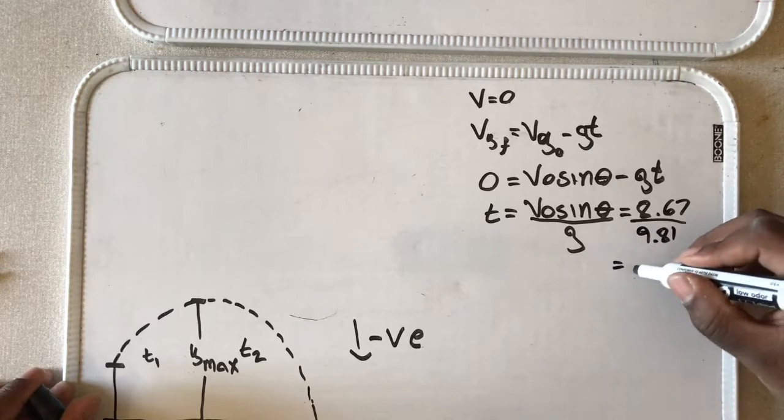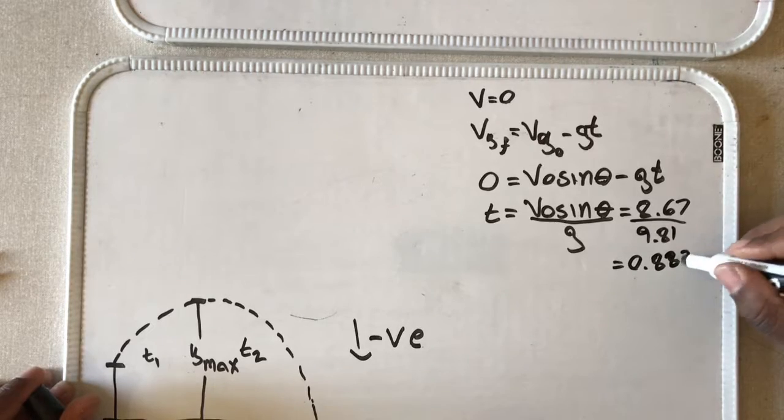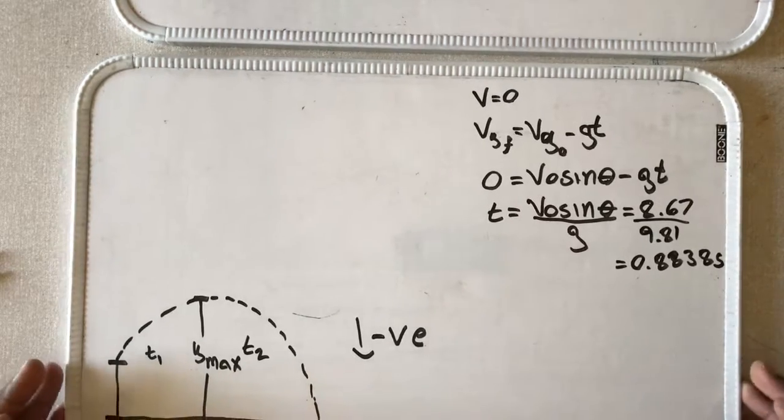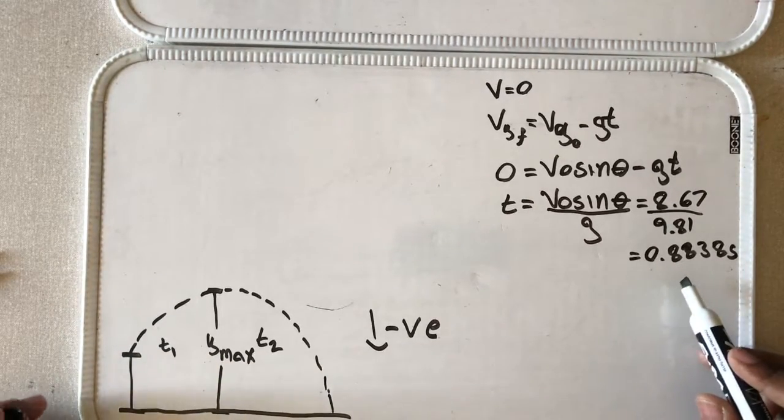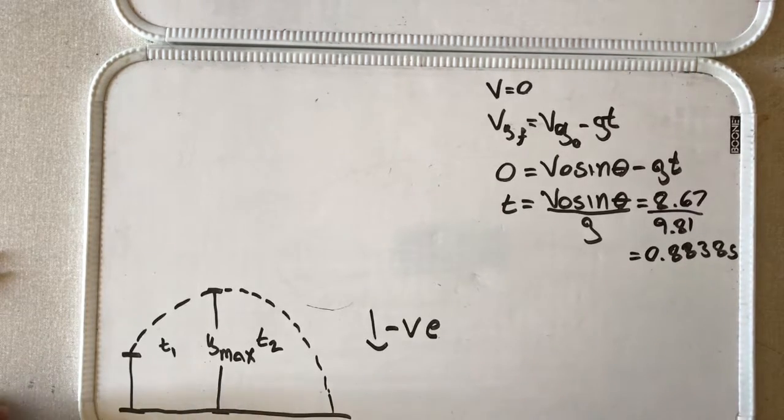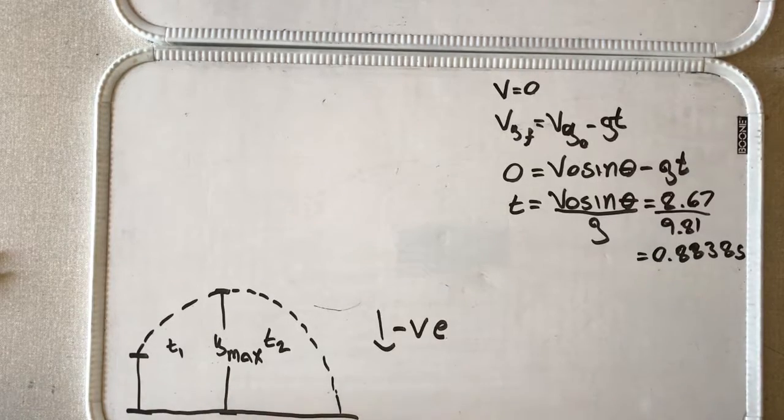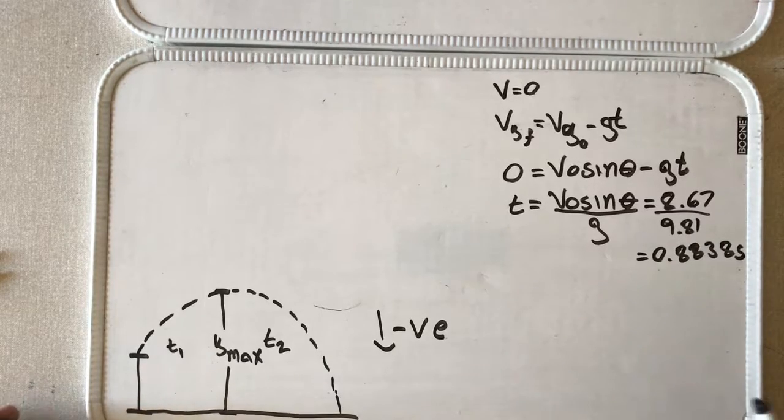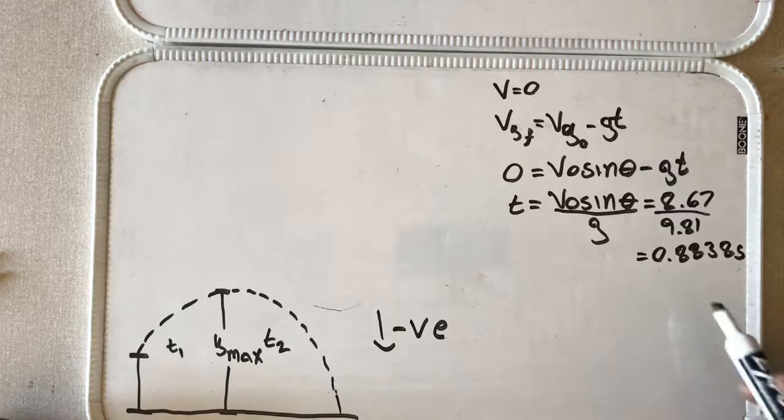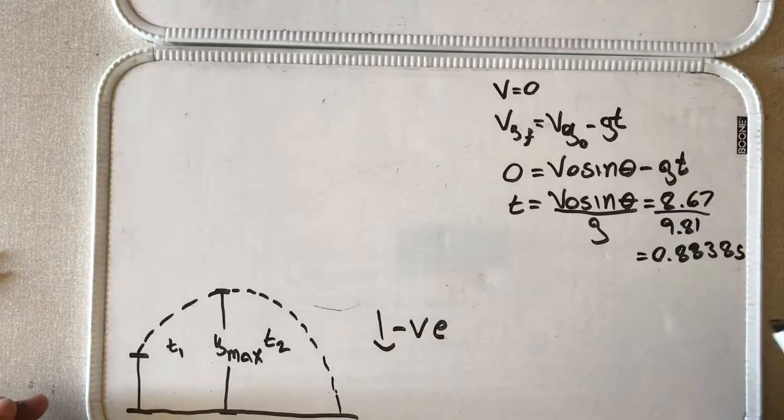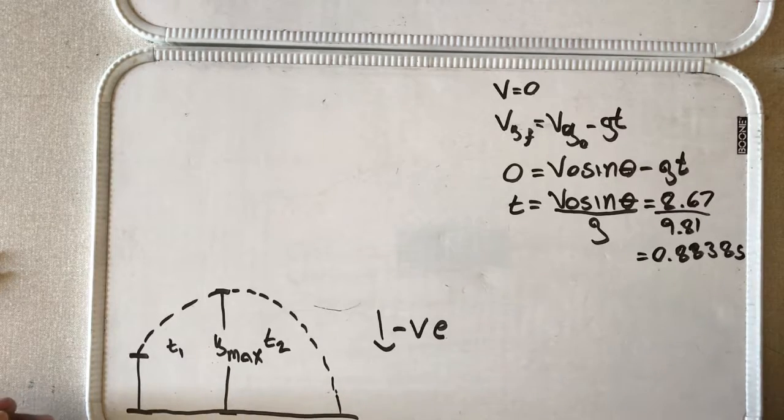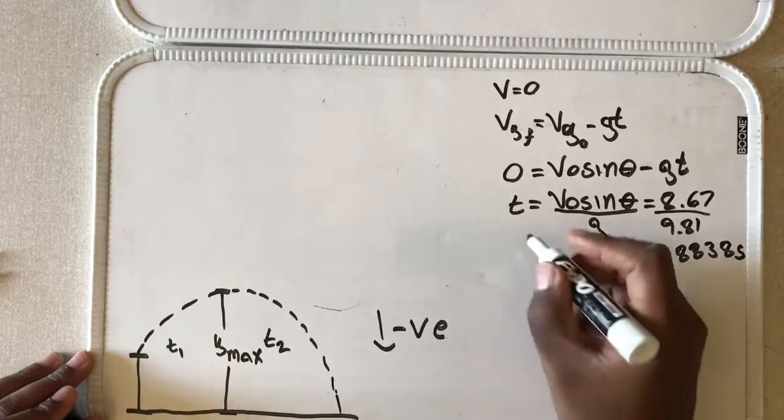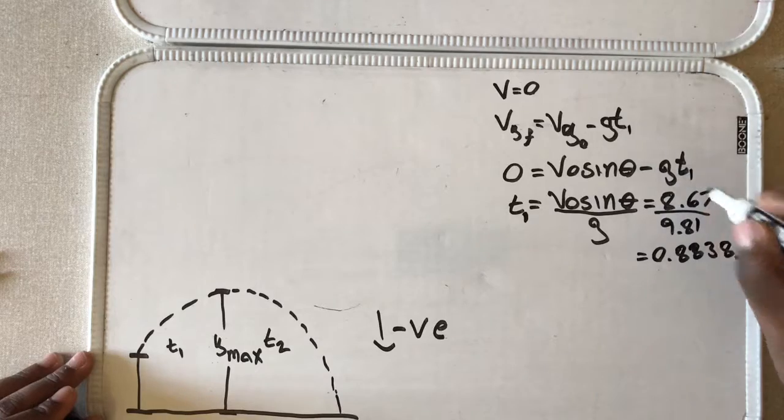giving us a time of 0.8838 seconds. When I'm doing problems like these where I have different parts and I'm going to have to use both of the answers, I like to express my answer in as many decimal places as I can, because you introduce an error and it messes with your final answer. Because if you were to round this to maybe one decimal place and you went over to the second part and you rounded that second time to the first decimal place again, when you added those two, you'd get a different time than you got when we solved it with the quadratic. And I'll explain that at the end of this video, or I'll show you it. So this is the time it took to get to its maximum height, this is t1.